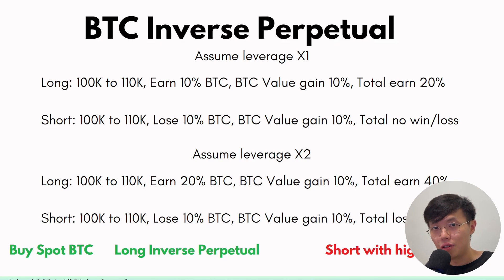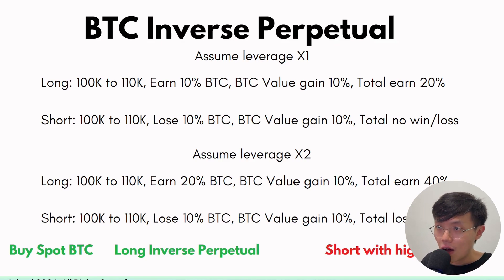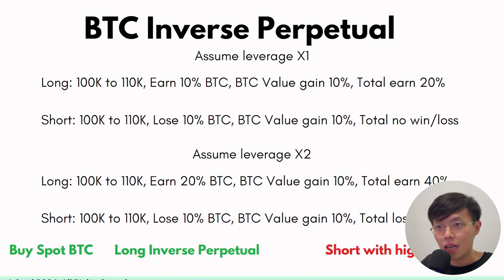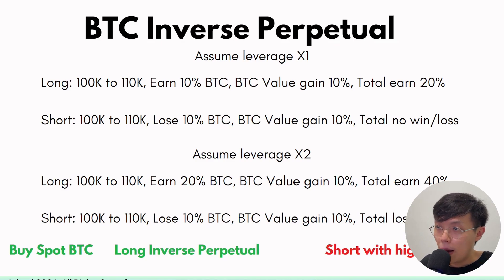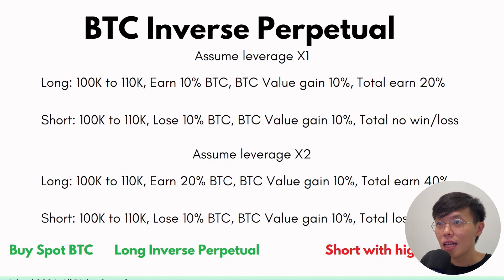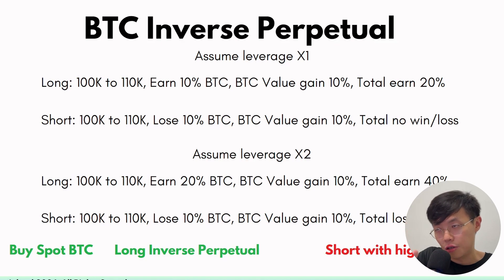That's the concept of inverse perpetual — instead of using USDT, you use the coin itself to trade the contract. If you short it, it's the other way around. If you were to short but the price goes up, you lose 10% of your BTC because you lost the contract, but the BTC value gains 10%, so in total you have no win and no loss.